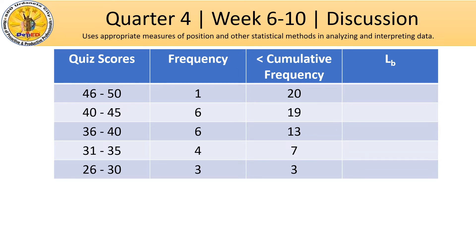The next we have to determine are the lower boundaries for each interval. How do we determine the lower boundary? You just have to subtract 0.5 from the lower limit of each interval. So 26 minus 0.5 gives us 25.5; 31 minus 0.5 gives us 30.5; 36 minus 0.5 gives us 35.5; and so on up to 45.5. That would be your lower boundary.